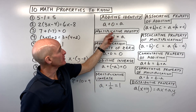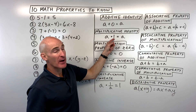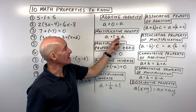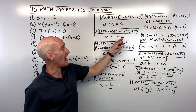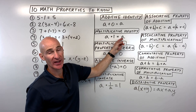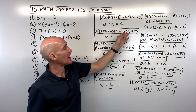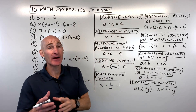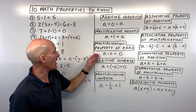The multiplicative identity: whenever you multiply by the number one, you get the identical quantity back. So a times one is equal to a. Remember, when you see the word 'identity,' think: I'm getting the identical quantity back.